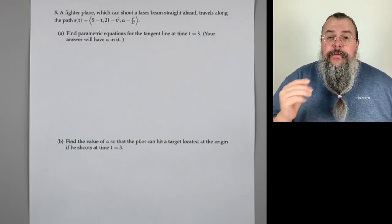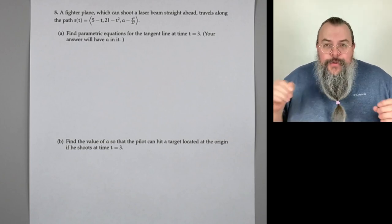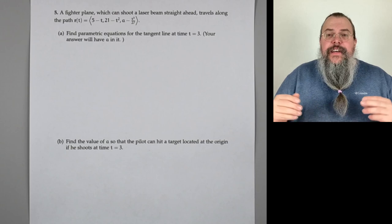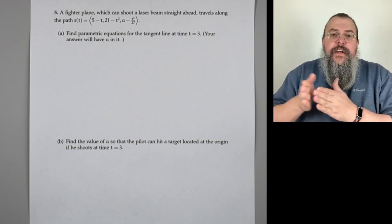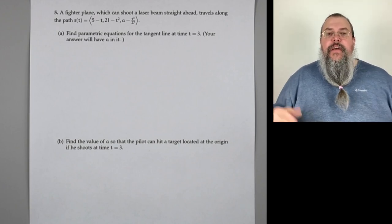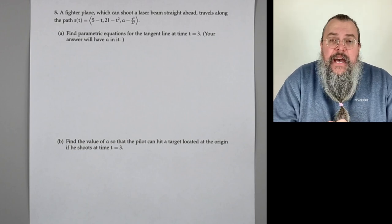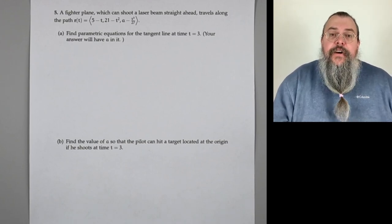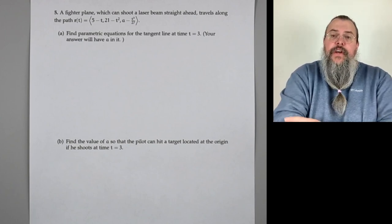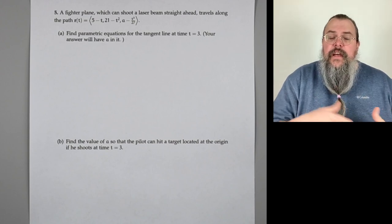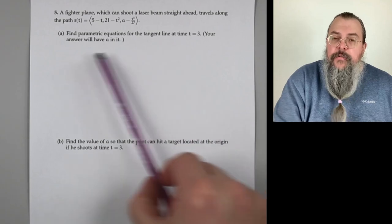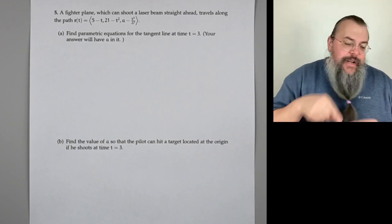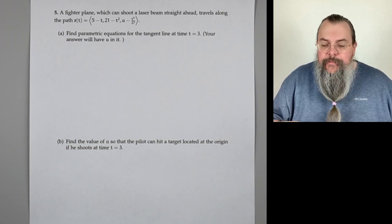Number five: a fighter plane can shoot a laser beam straight ahead. The reason they use lasers is because it makes a nice, straight, instantaneous line — so you should think of the laser beam as the tangent line. The fighter plane is traveling along the path r(t) = ⟨5-t, 21-t², a-t³/27⟩. Part A: find parametric equations for the tangent line at time t = 3.